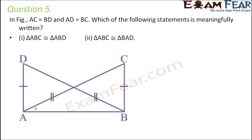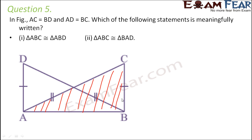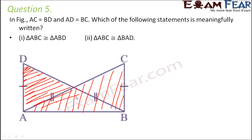Triangle ABC — this triangle — is congruent to triangle ABD — that is this triangle. So is this more meaningful, or is it more meaningful to write that triangle ABC is congruent to triangle BAD?